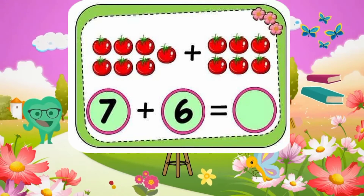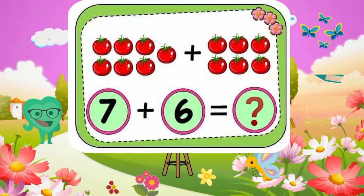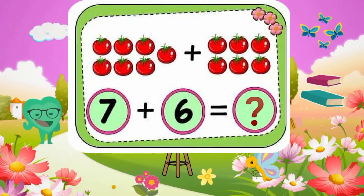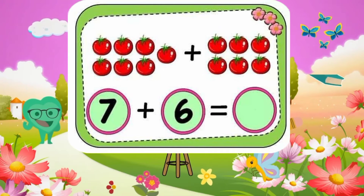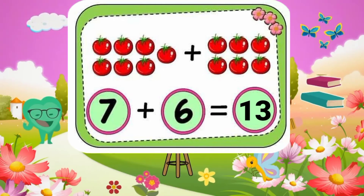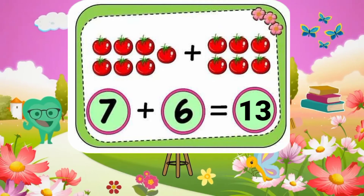7 plus 6 equals what? 7 plus 6 equals 13. Well done.